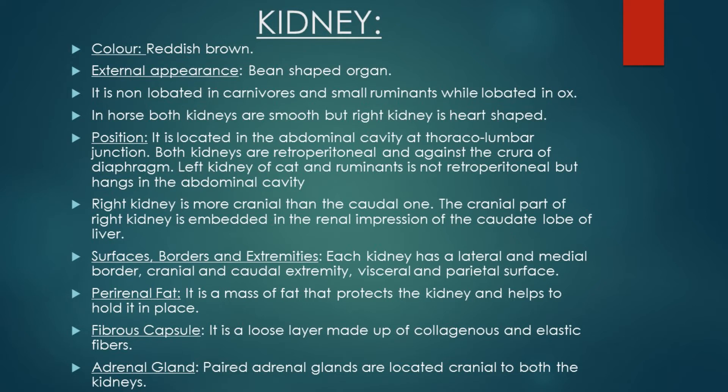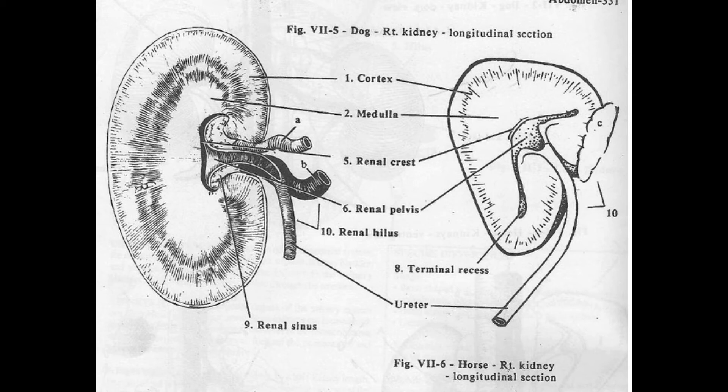There is one exception in cats and ruminants: the left kidney of cats and ruminants is not retroperitoneal but hangs in the abdominal cavity. Now let's talk about the surfaces, borders, and extremities of the kidneys. Each kidney has a lateral convex border, a medial concave border, cranial and caudal extremity, and visceral and parietal surface. The parietal surface faces the vertebral column or is present dorsally, while the visceral surface faces visceral organs, present ventrally.